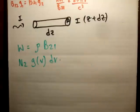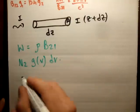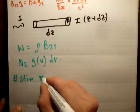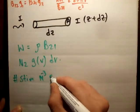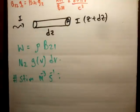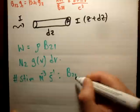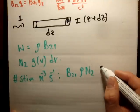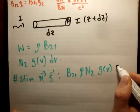That means that the number of atoms stimulated per unit volume, per unit time, the number stimulated per meter cubed per second, is going to be equal to b21 times rho times N2 times the line shape function g nu, d nu.